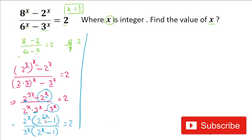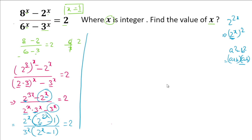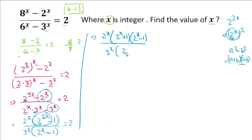Now 2^(2x) can be written as (2^x)², so the numerator factor 2^(2x) - 1 is in the form a² - b², where a = 2^x and b = 1. Applying a² - b² = (a+b)(a-b), we rewrite the numerator as 2^x · (2^x + 1)(2^x - 1), and the denominator remains 3^x · (2^x - 1).